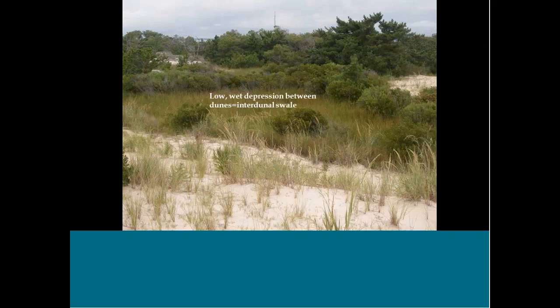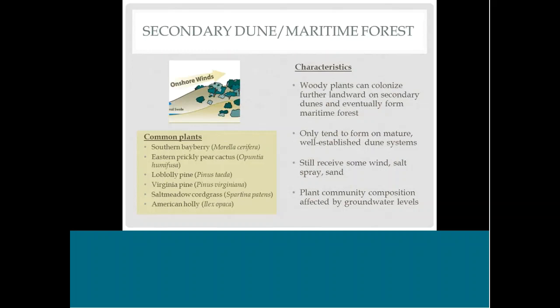A photo of an interdunal swale shows sandy dunes with vegetation on either side and dense vegetation in the low wet swale in the middle. Moving even further inland is the secondary dune and maritime forest area, where woody plants begin to grow because it's stable enough and far enough from the harsher coastal conditions. Plant communities can vary depending on groundwater levels. It's worth noting that secondary dunes and maritime forest are only present in mature areas with little human disturbance.